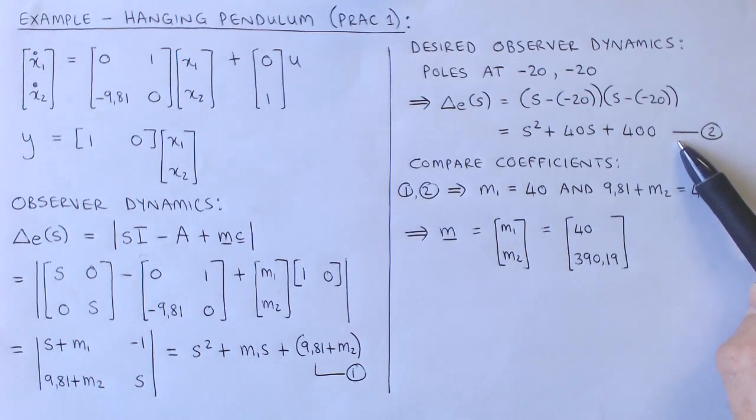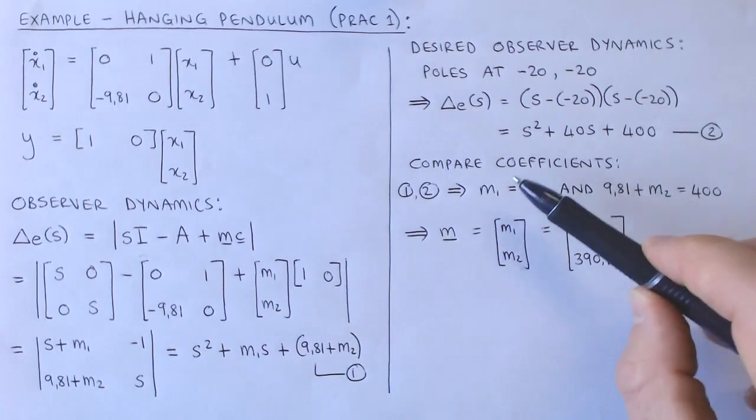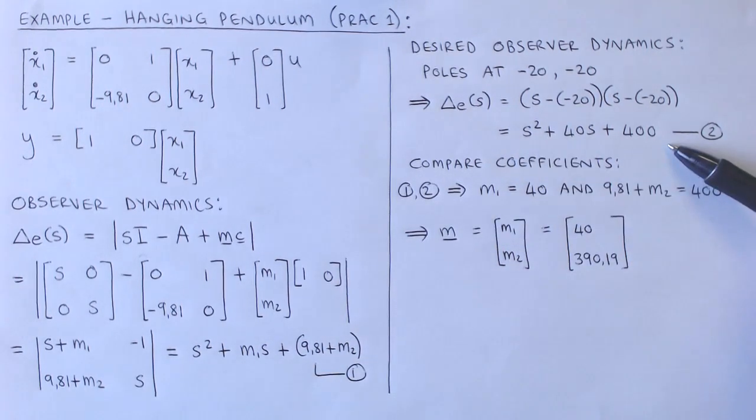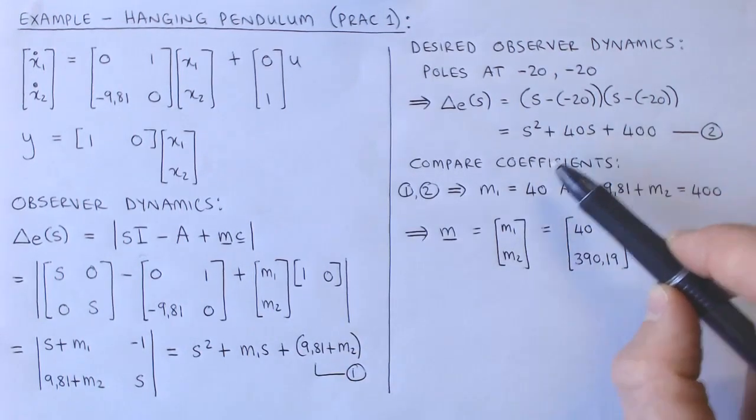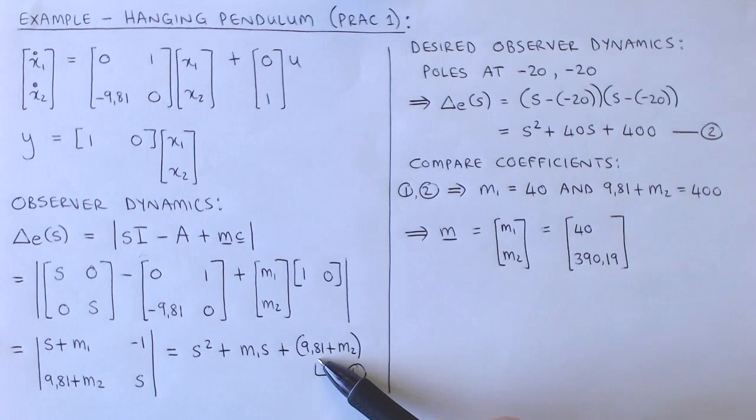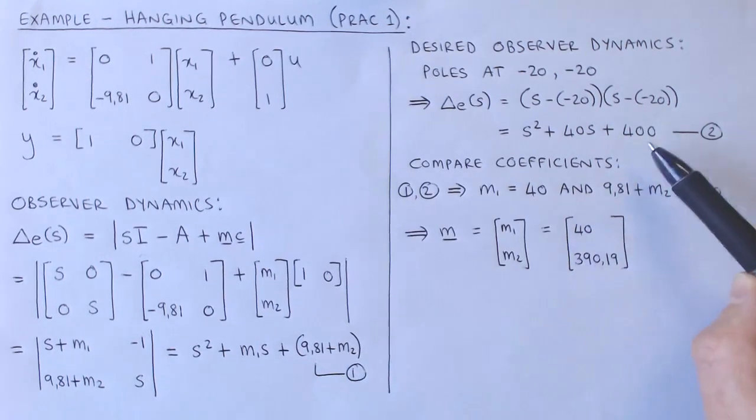We now compare the coefficients of the observer characteristic polynomial with that of the desired observer characteristic polynomial, and we get M1 equal to 40 and 9.81 plus M2 equal to 400.